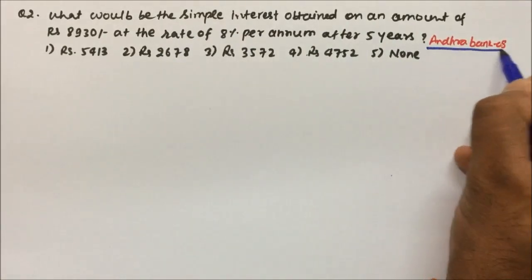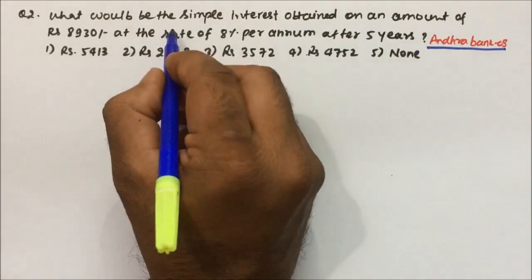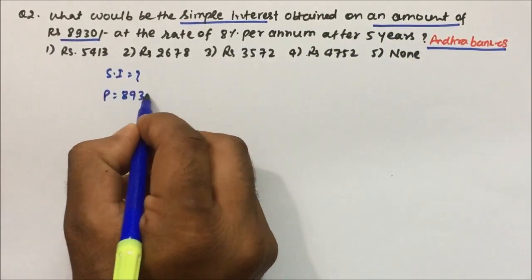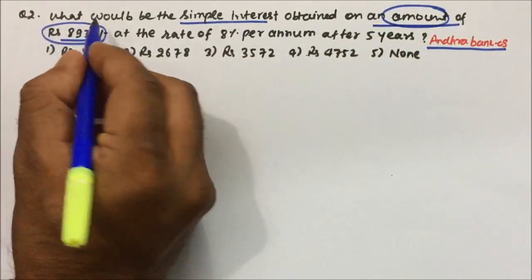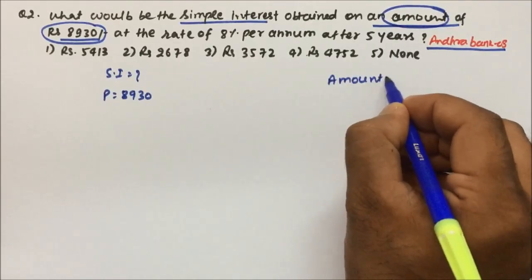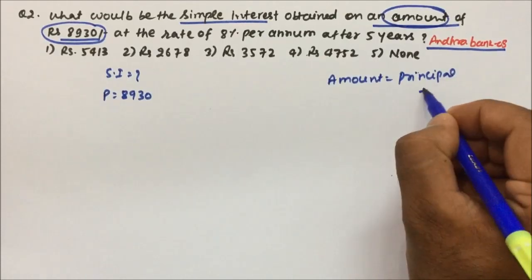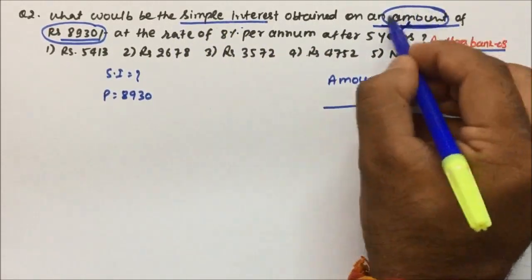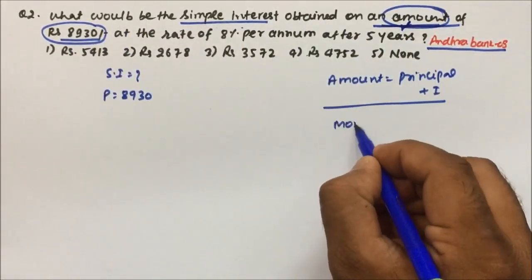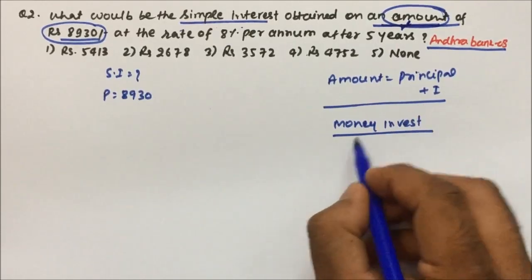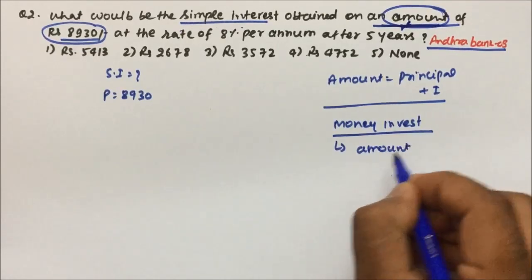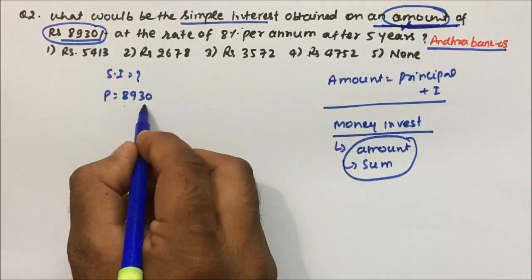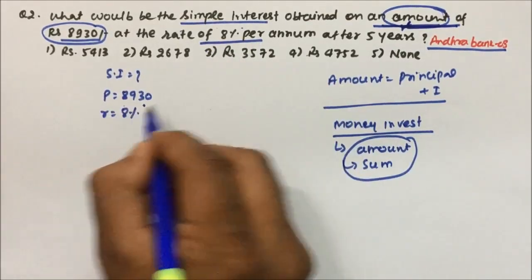Question number 2 was asked in Andhra Bank Clerk Exams 2008. What will be the simple interest on an amount of ₹8930? Here, even though they say 'amount,' don't get confused — they can use different terms like 'on an amount of' or 'on a sum of,' but whatever money you are going to invest is your principal. So P = 8930, rate = 8%, time = 5 years.